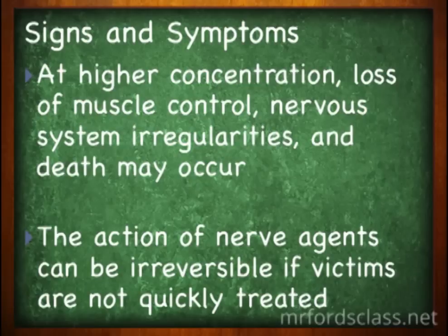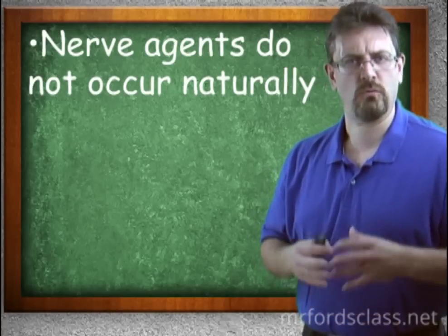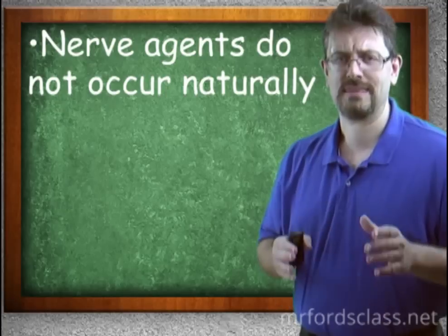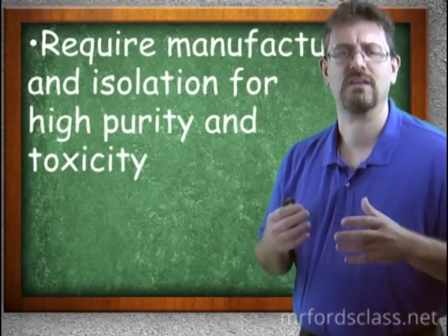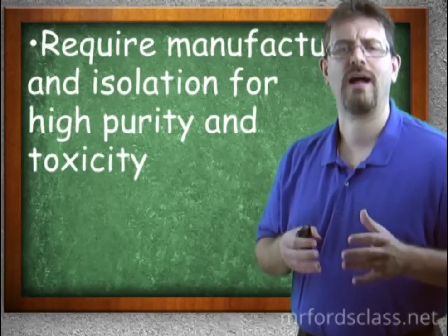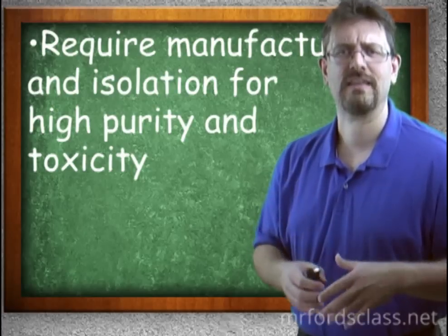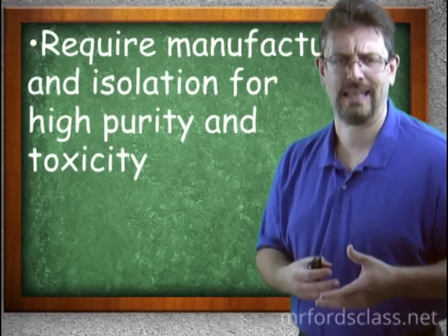The actions of the nerve agent can be irreversible if victims are not treated quickly. So where do these nasty things come from? First of all, nerve agents are not found in nature — they have to be man-made. They are made in manufacturing, in labs, and have to be isolated for high purity and toxicity in order to be effective as a killing agent.